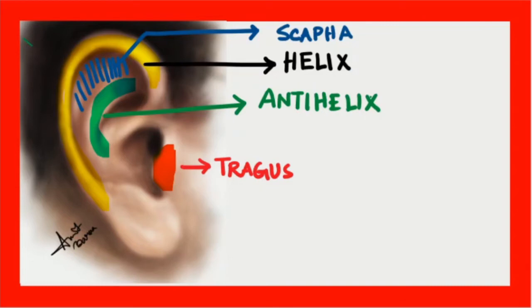And another similar structure which is protruding, just over here, is known as the anti-tragus.